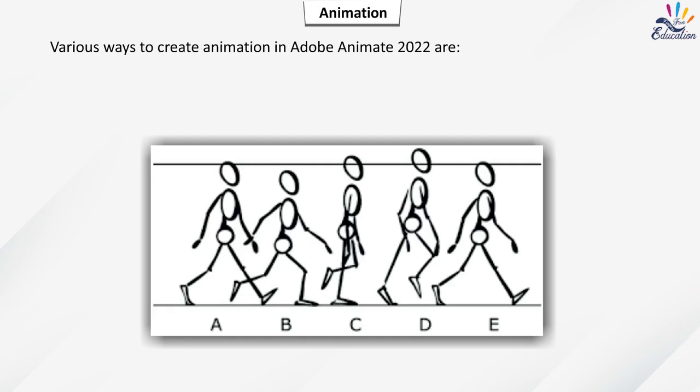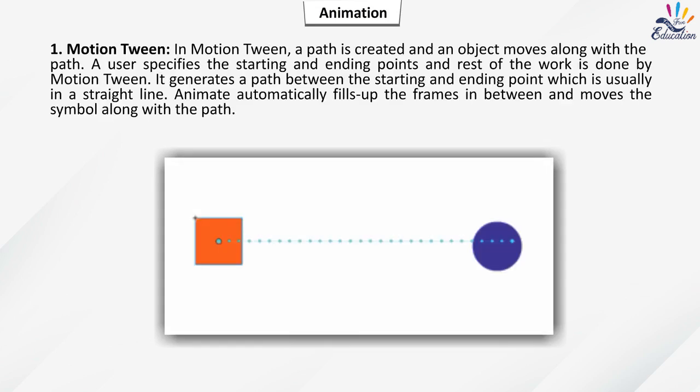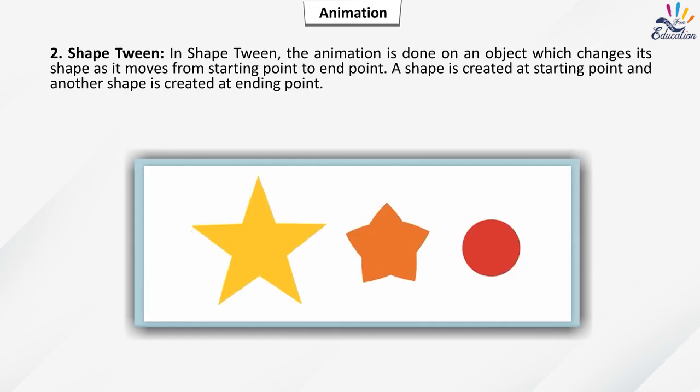Various ways to create animation in Adobe Animate 2022: Motion Tween — a path is created and an object moves along it. The user specifies starting and ending points; the rest is done by the motion tween, which generates a path between them usually in a straight line. Animate automatically fills in the frames in between and moves the symbol along the path.